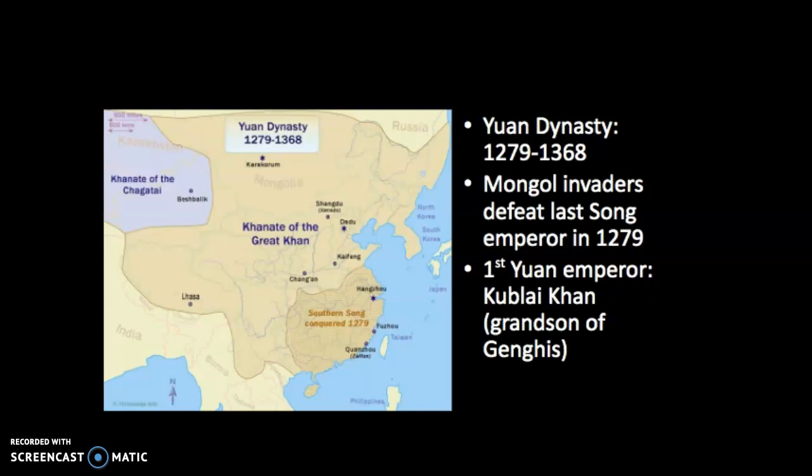The new Yuan Dynasty established their capital in what is now Beijing in Northern China. This was a new invading force, and all of the Chinese cultural elite experienced a great deal of tension with the political court and these new foreign rulers. We're going to talk about this tension and how different artists and intellectuals expressed their displeasure with their government.